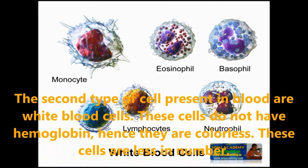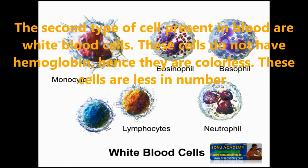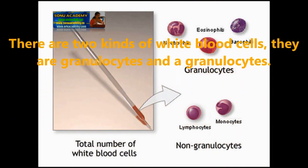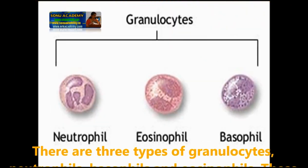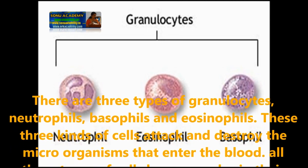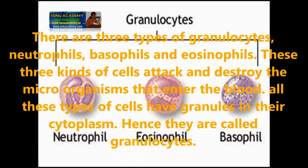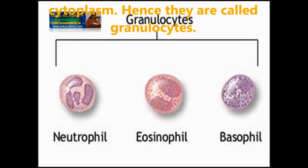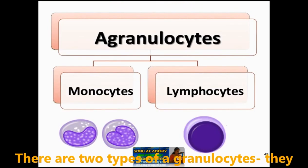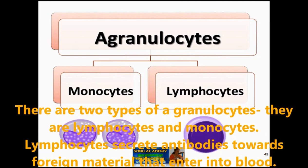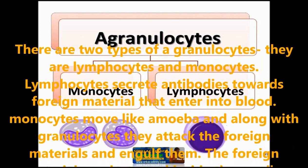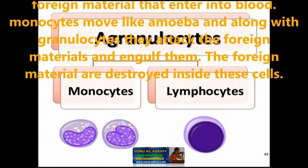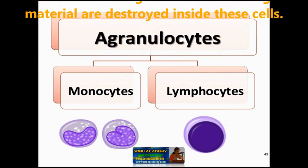White blood cells do not have hemoglobin; hence they are colorless. These cells are less in number. There are two kinds of white blood cells: granulocytes and agranulocytes. There are three types of granulocytes: neutrophils, basophils and eosinophils. These three kinds of cells attack and destroy the microorganisms that enter the blood. All three types of cells have granules in their cytoplasm, hence they are called granulocytes. Agranulocytes include lymphocytes and monocytes. Lymphocytes secrete antibodies toward foreign material that enters the blood. Monocytes move like amoeba and, along with granulocytes, attract and engulf foreign material, which is then destroyed inside the cells.